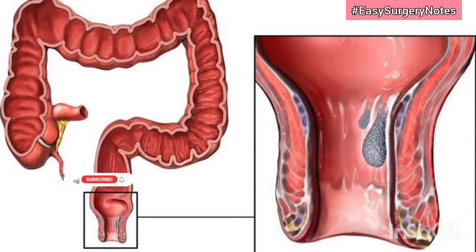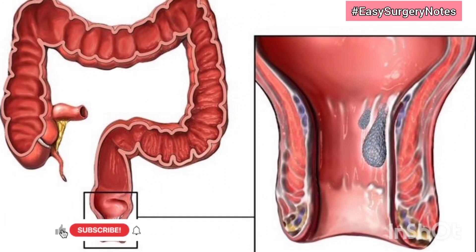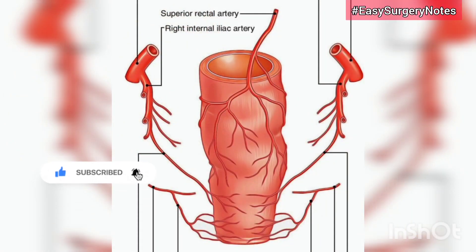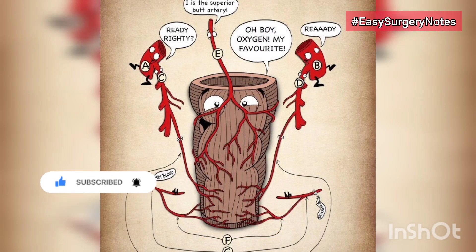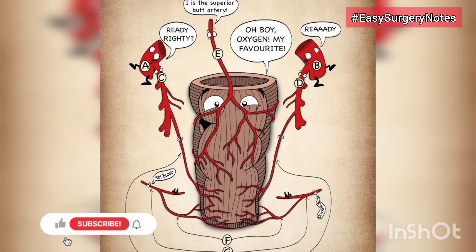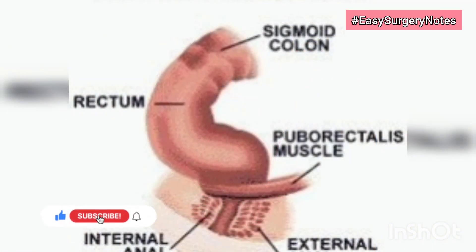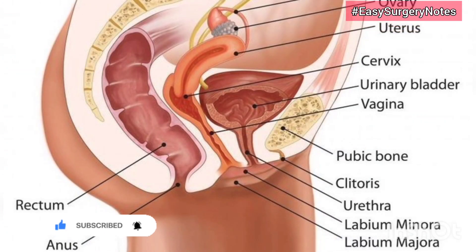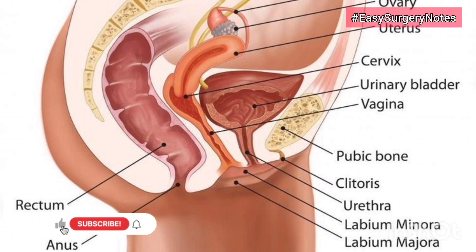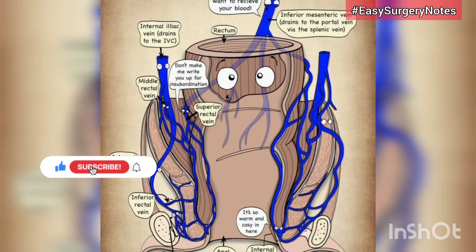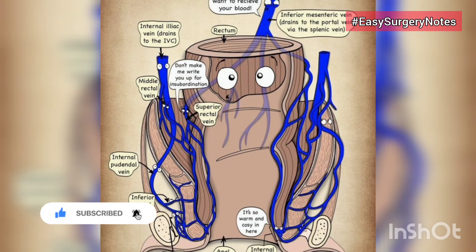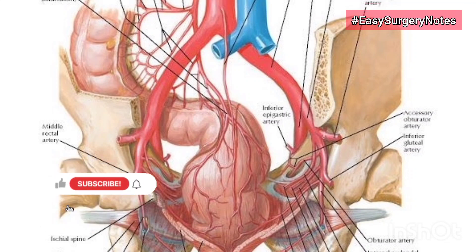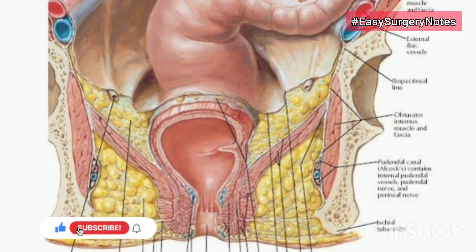Relations of the rectum — peritoneal: the upper one-third is covered with peritoneum in front and on sides; the middle one-third is covered only in front; the lower one-third is devoid of peritoneum. Visceral — anteriorly in males: the upper two-thirds is related to the rectovesical pouch; the lower one-third to the base of the urinary bladder, terminal part of ureters, seminal vesicles, efferent ducts, and the prostate. Anteriorly in females: the upper two-thirds is related to the rectouterine pouch; the lower one-third to the lower part of the vagina. Posterior relations include the lower three sacral pieces, coccyx, anococcygeal ligaments, piriformis, coccygeus, levator ani, median sacral, superior rectal, and lower lateral sacral vessels, and the sympathetic chain.